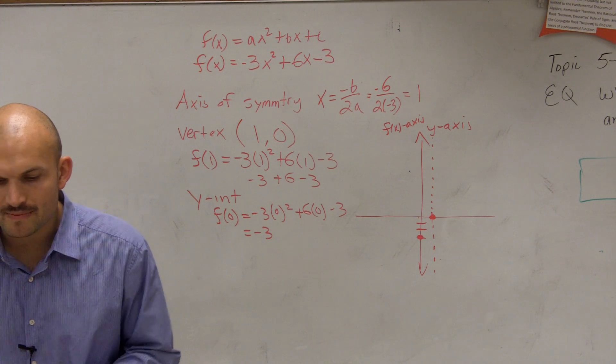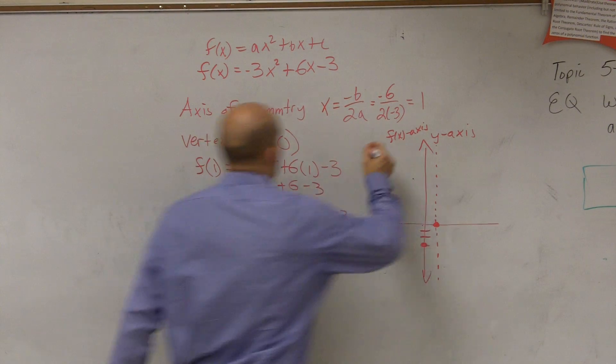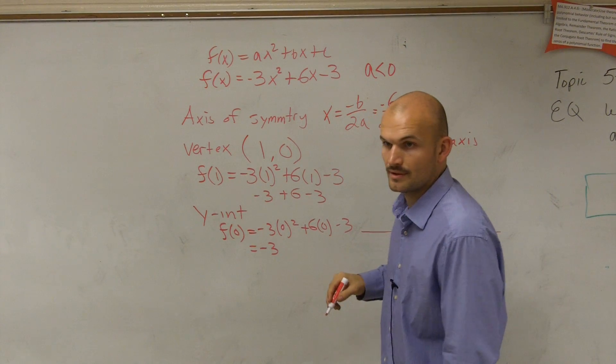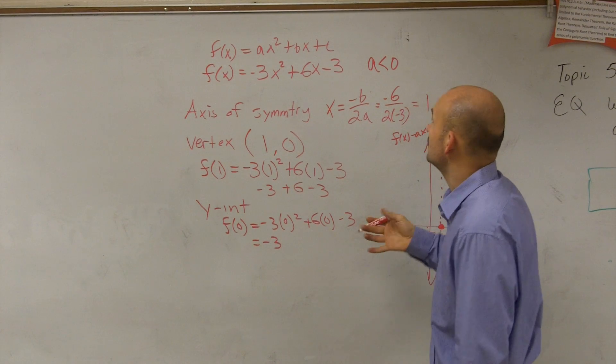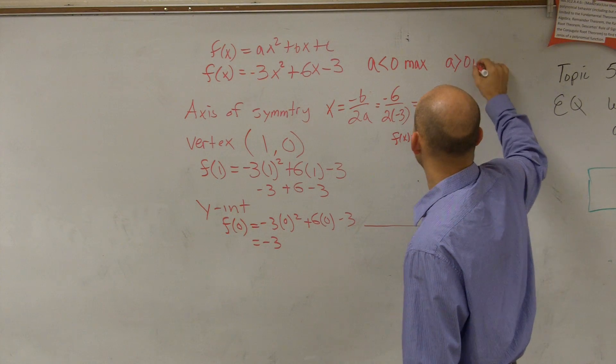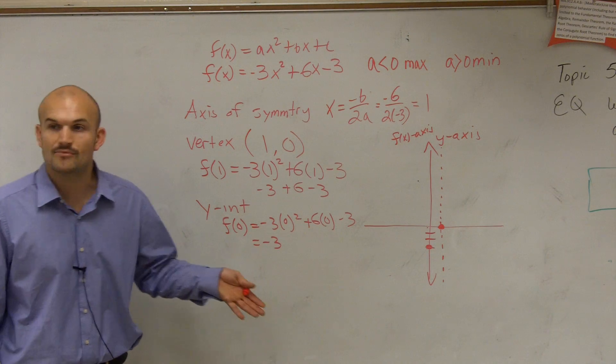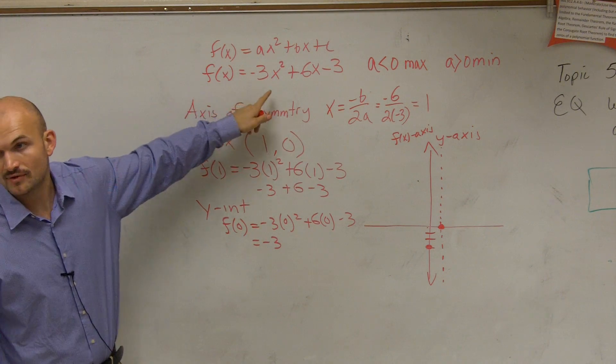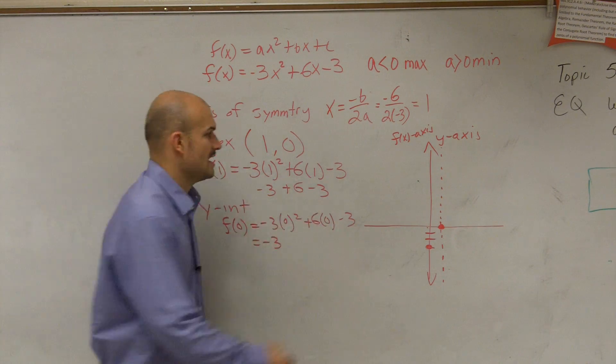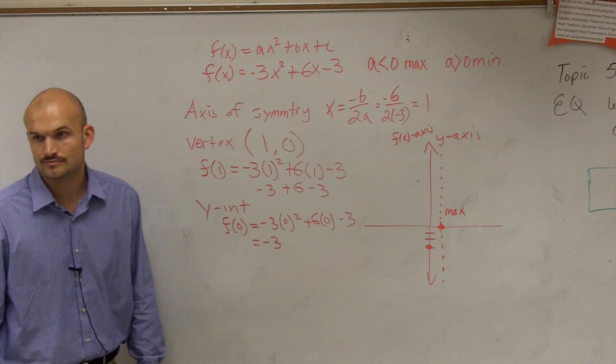Then the next point, it says, is determine the maximum or the minimum. So the maximum or the minimum goes by some rules. And the rules for the maximum or min are determined by your a. If a is less than 0, that means the value of a is less than 0. So then if a is less than 0, therefore, you're going to have a maximum point. And if a is greater than 0, you're going to have a minimum point. Or I'm sorry, that means your vertex is either going to be the max or the minimum. So we look at our a, and our a is equal to negative 3. Is negative 3 greater than or less than 0? Less than 0. So therefore, this is going to be a max. That means my graph is not going to travel higher than 0. All right?